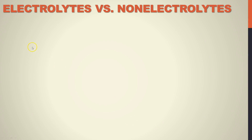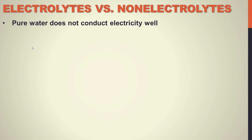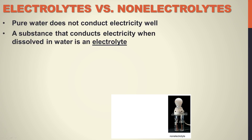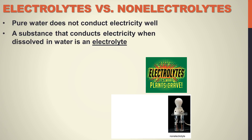Let's talk about electrolytes and non-electrolytes. Contrary to what Hollywood movies would lead you to believe, pure water is actually a terrible conductor of electricity. If you take two metal prongs, put them in pure water, and try to run current through it, nothing's going to happen — that light bulb is not going to light up. However, there are plenty of substances that, when dissolved in water, will conduct electricity — they are called electrolytes. It's what plants crave.